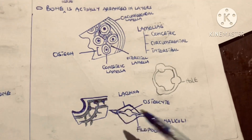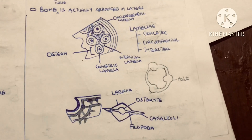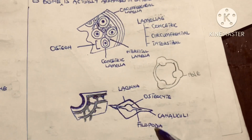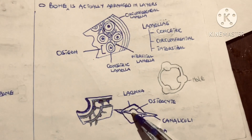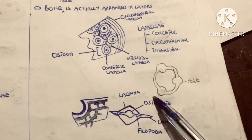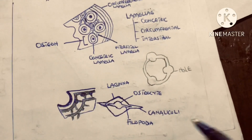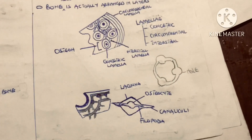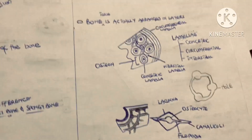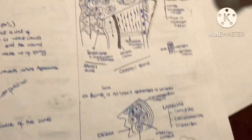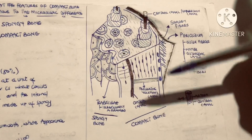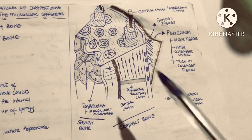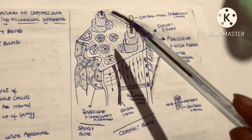The osteocytes have extensions called filipodia. The canaliculi house the filipodia, which are the extensions of the osteocytes. The canaliculi help the filipodia to attach to the filipodia of other osteocytes. That covers the compact bone.